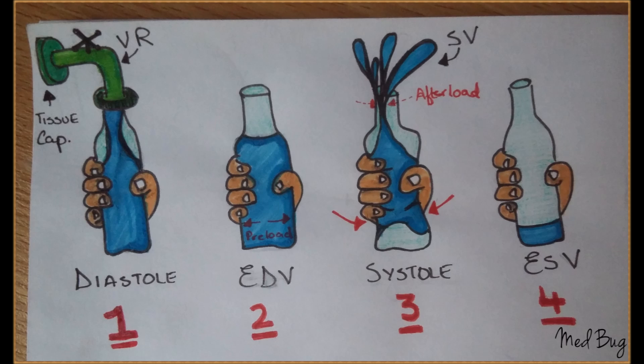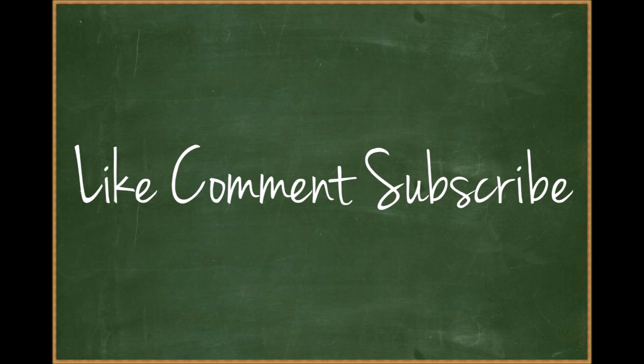That's about it. Now just replace the word water with blood and bottle with ventricle and you're good to go. In the end, I just wanted to add that these are obviously not the formal definitions — for formal definitions, refer to your textbooks or the internet.